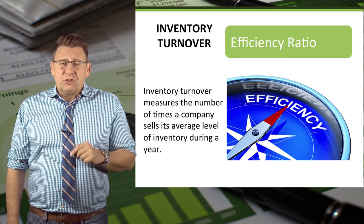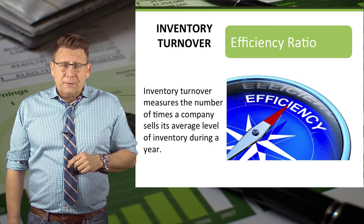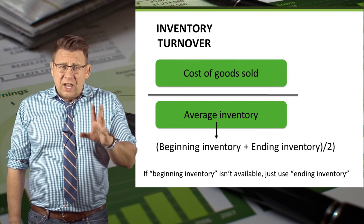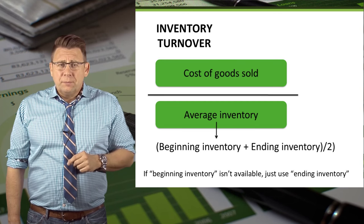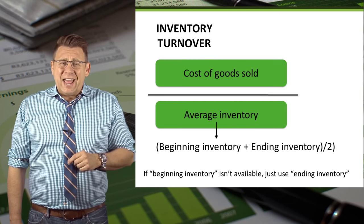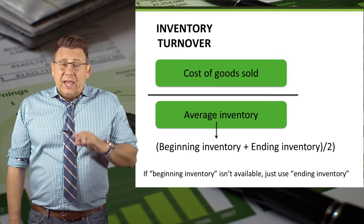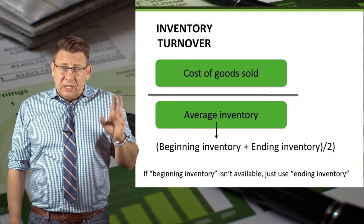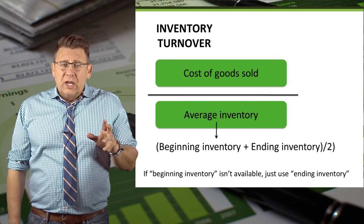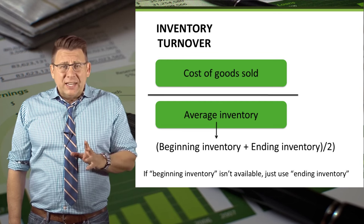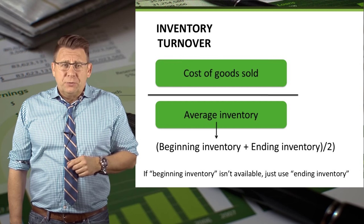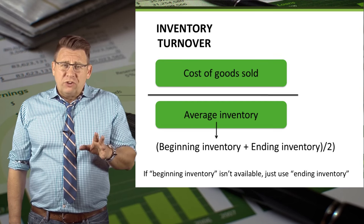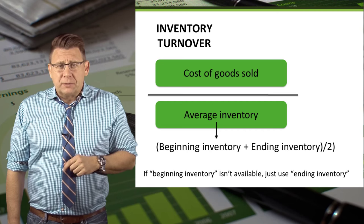Inventory turnover is a measure of efficiency. The formula is cost of goods sold divided by average inventory. Average inventory is calculated by taking beginning inventory plus ending inventory and dividing by 2. This is one of the ratios where the higher the number the better.